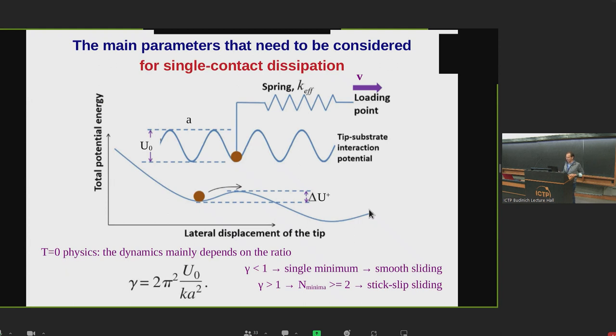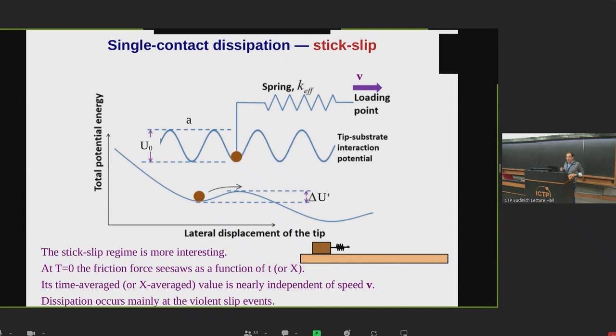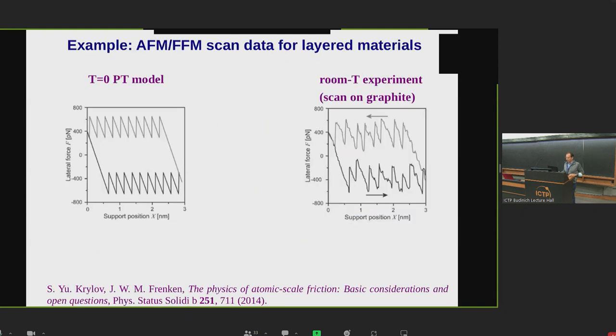The slider will just jump from one minimum to the next at well-defined times, and this will give you a situation where friction has less trivial dependence on speed. The simplest way to understand it is that friction is essentially independent of speed. For example, you would get some kind of friction loop like this. This would be the Prandtl-Tomlinson model. This would be an actual experiment with an AFM with a scan over graphite.